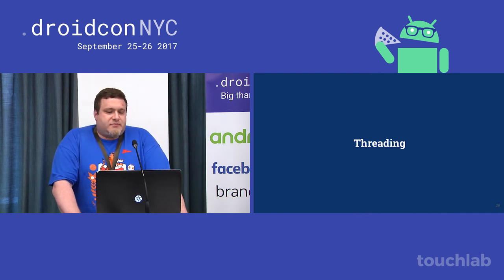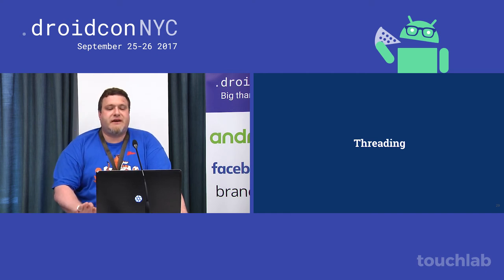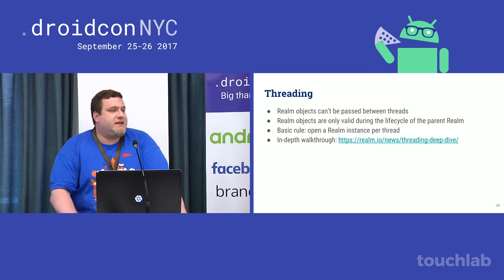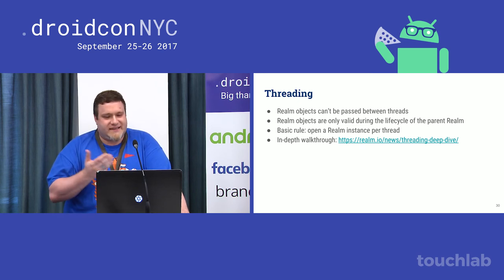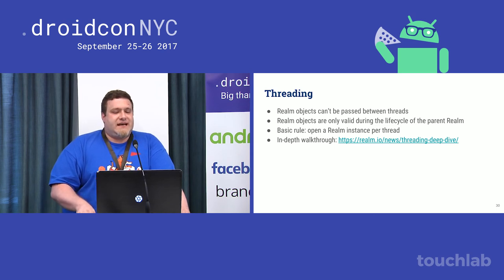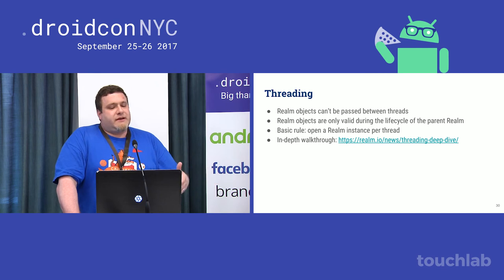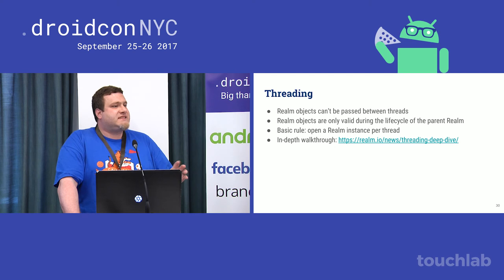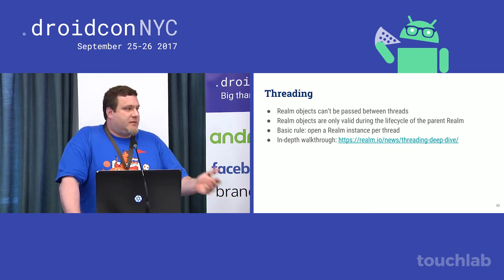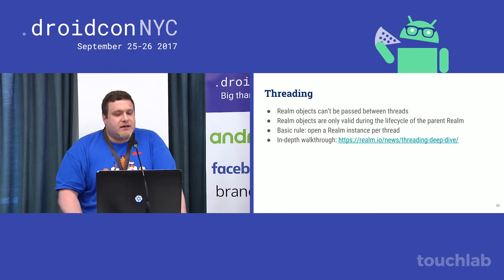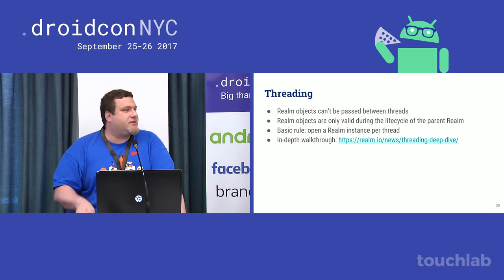One of the last problem areas we ran into was threading. Realm is very particular about threading and it can take a little bit to wrap your brain around. Realm objects are only valid on the thread that they're obtained on, and they're only valid while the Realm instance is open — it's a lot like a cursor. Reading data out of a Realm object after the Realm is closed is a bad thing. You just open a Realm instance per thread; opening and closing realms are ref-counted, so you can safely open and close multiple times even in nested use cases, and it's pretty cheap. But the first couple of times you build an app with Realm, this is going to bite you.